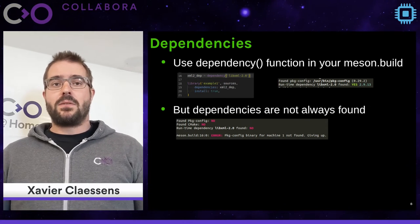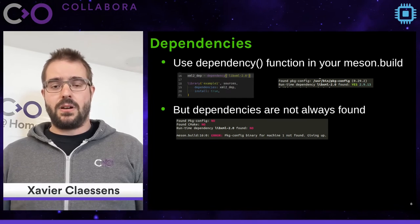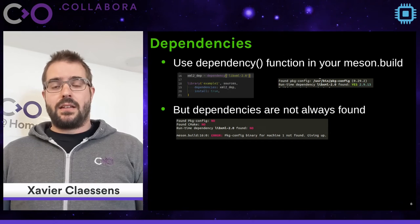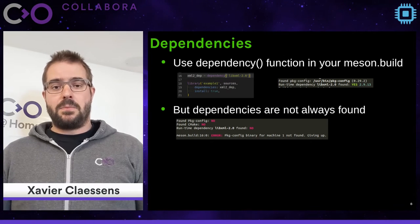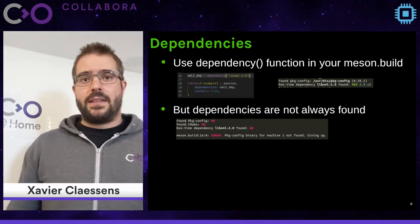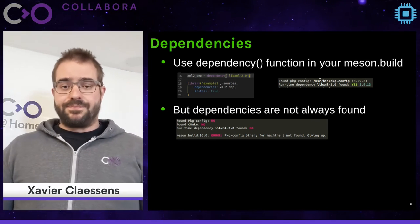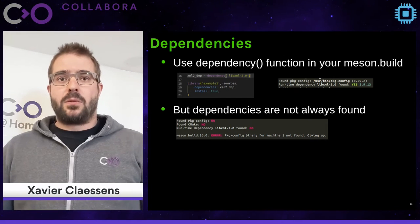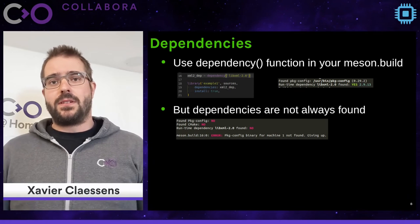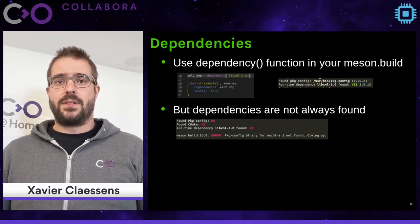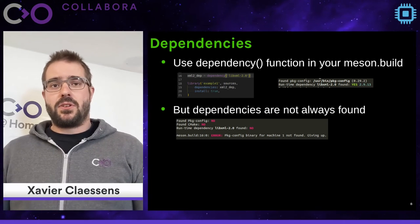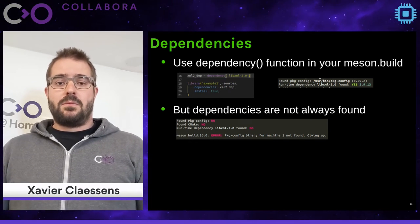Once you have the dependency object you pass it to your library and it will link against it. In the example output, you can see Meson reports that it found libxml2 using pkg-config and shows the version it found.